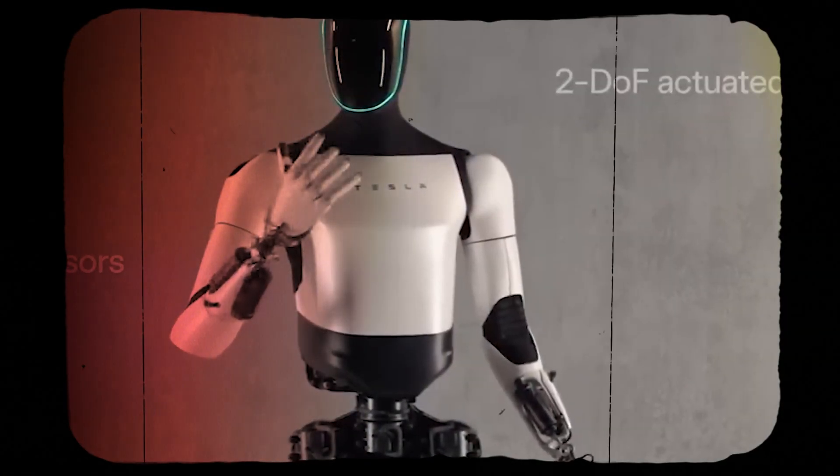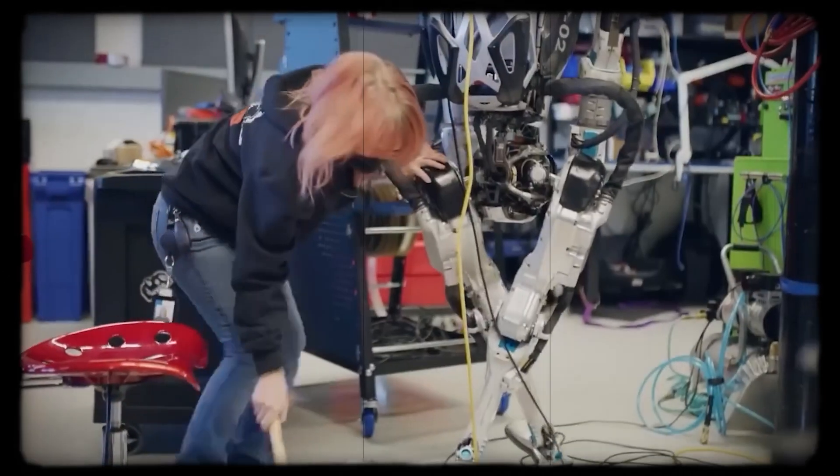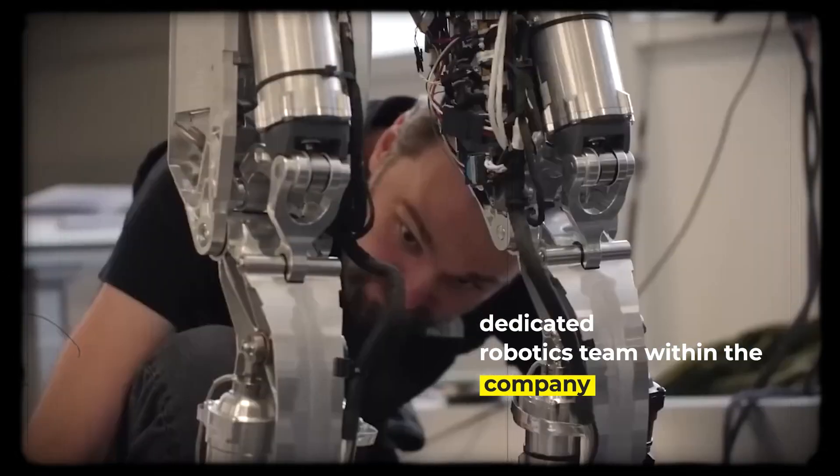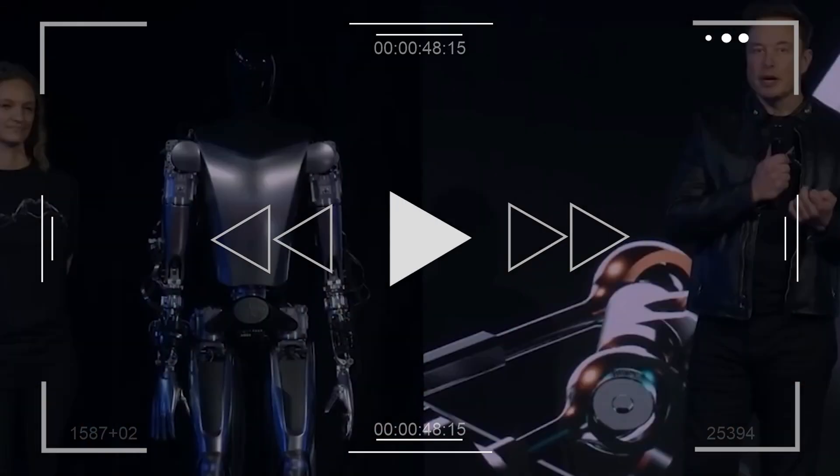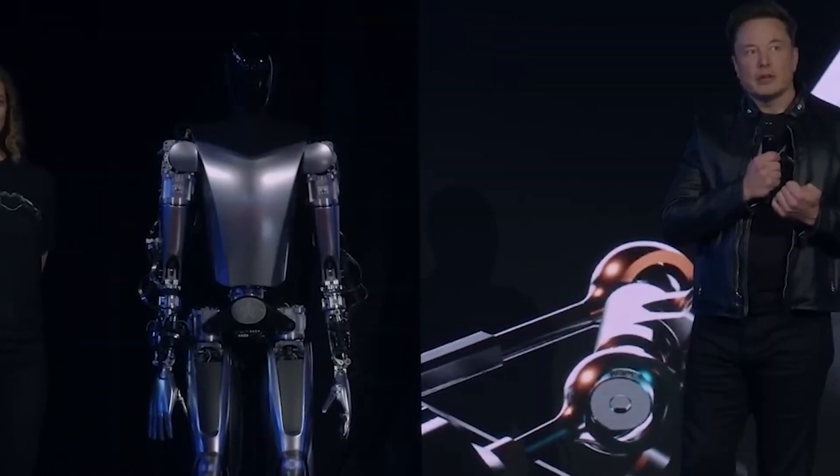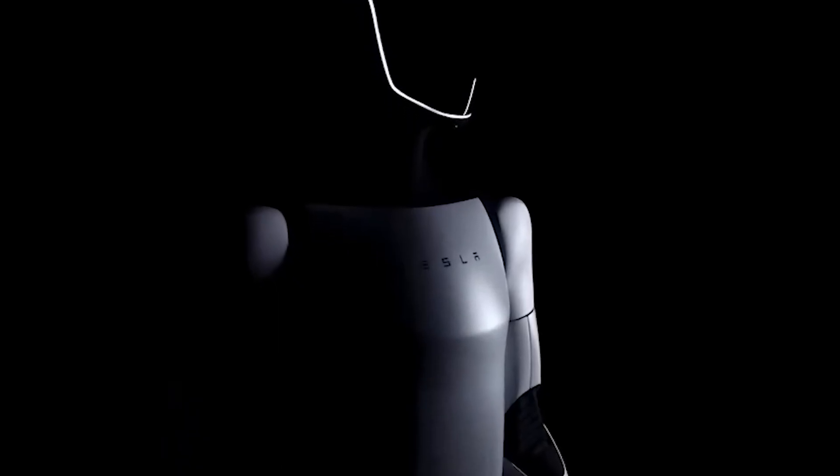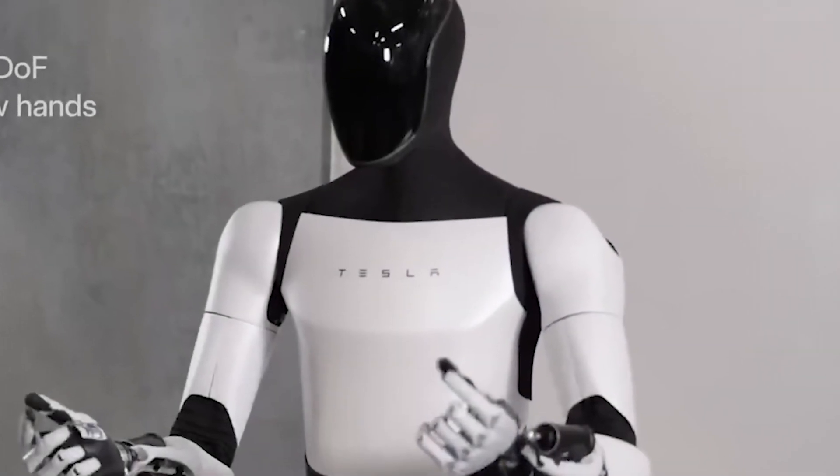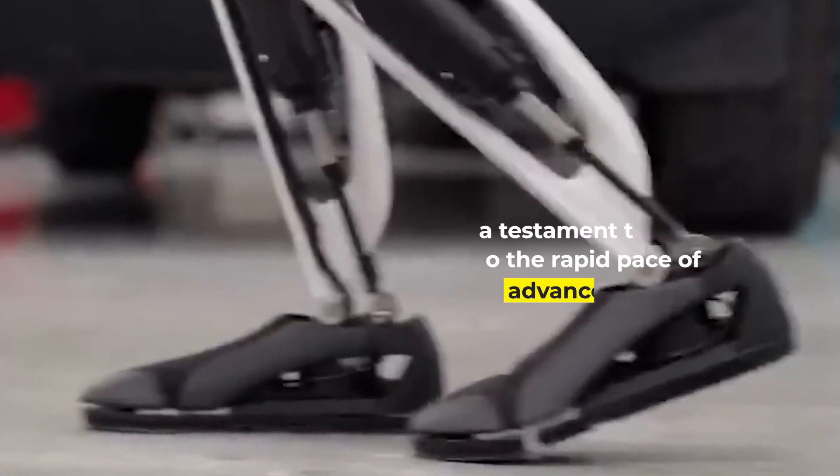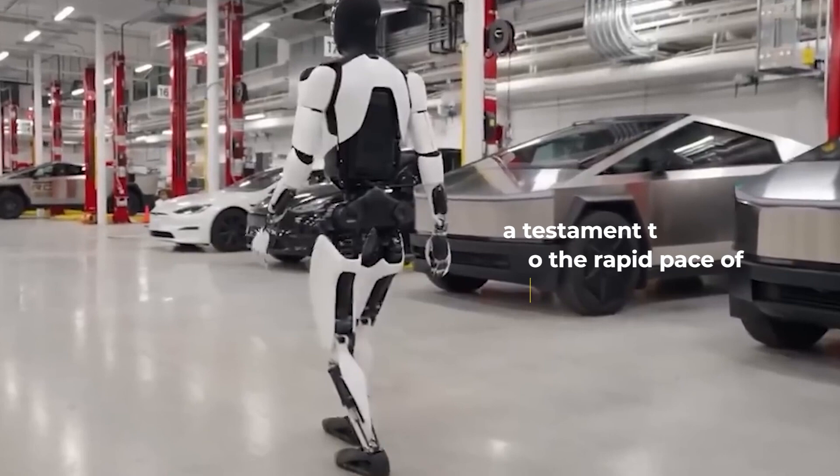It announced Tesla's entry into the realm of robotics and signaled the establishment of a dedicated robotics team within the company. Fast forward to the present, and Tesla has not only addressed the limitations of the prototype, but has now unveiled the second iteration of Optimus Robot, a testament to the rapid pace of advancements within Tesla's robotics division.